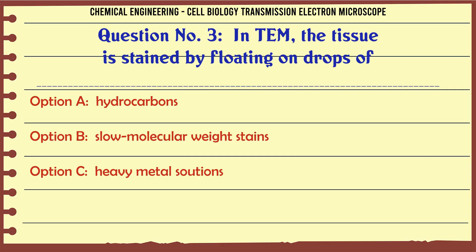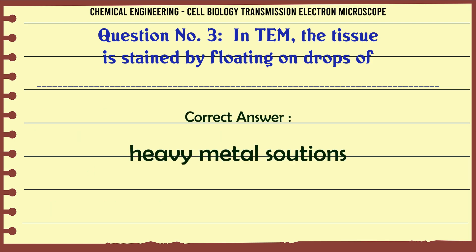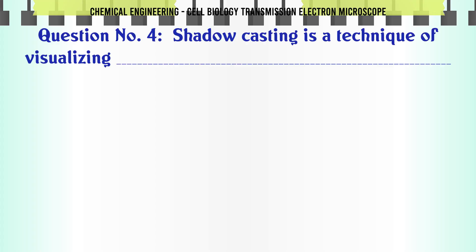Question 3: In TEM the tissue is stained by floating on drops of: A. Hydrocarbons, B. Low molecular weight stains, C. Heavy metal solutions, D. Oil immersion. The correct answer is heavy metal solutions.